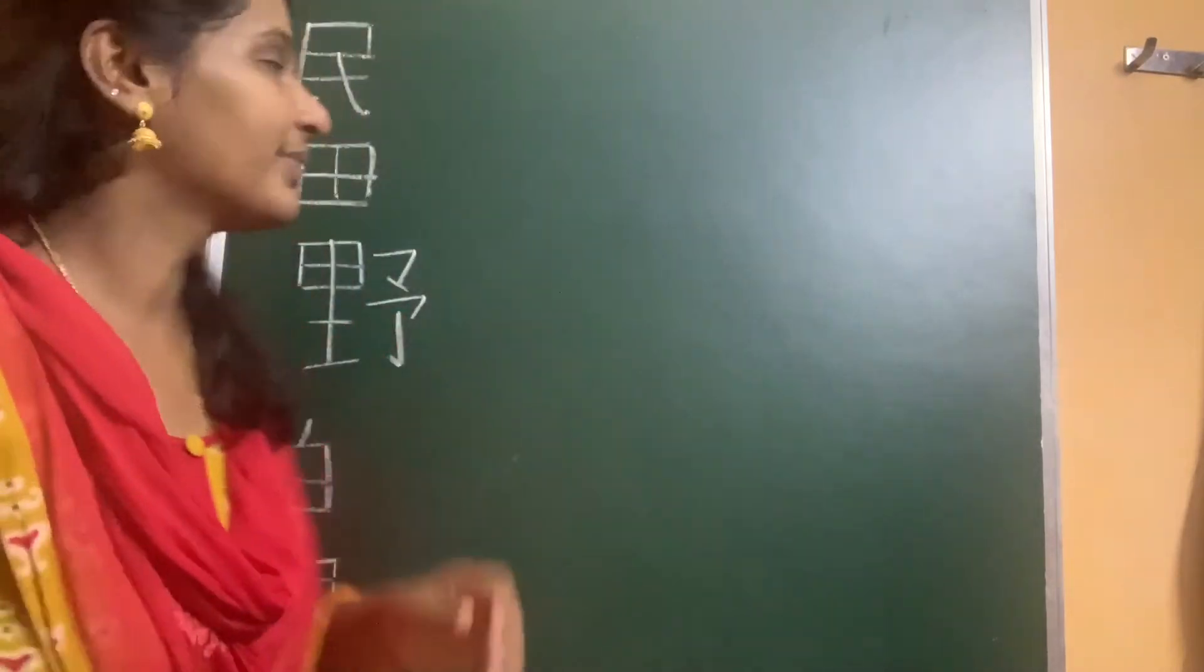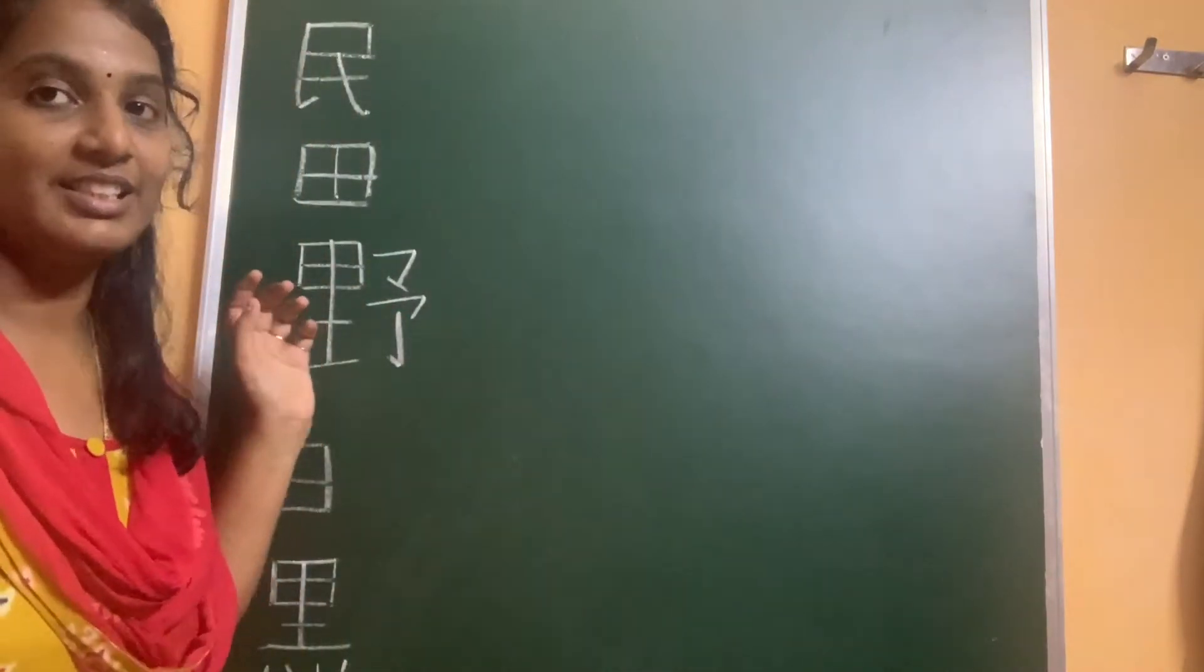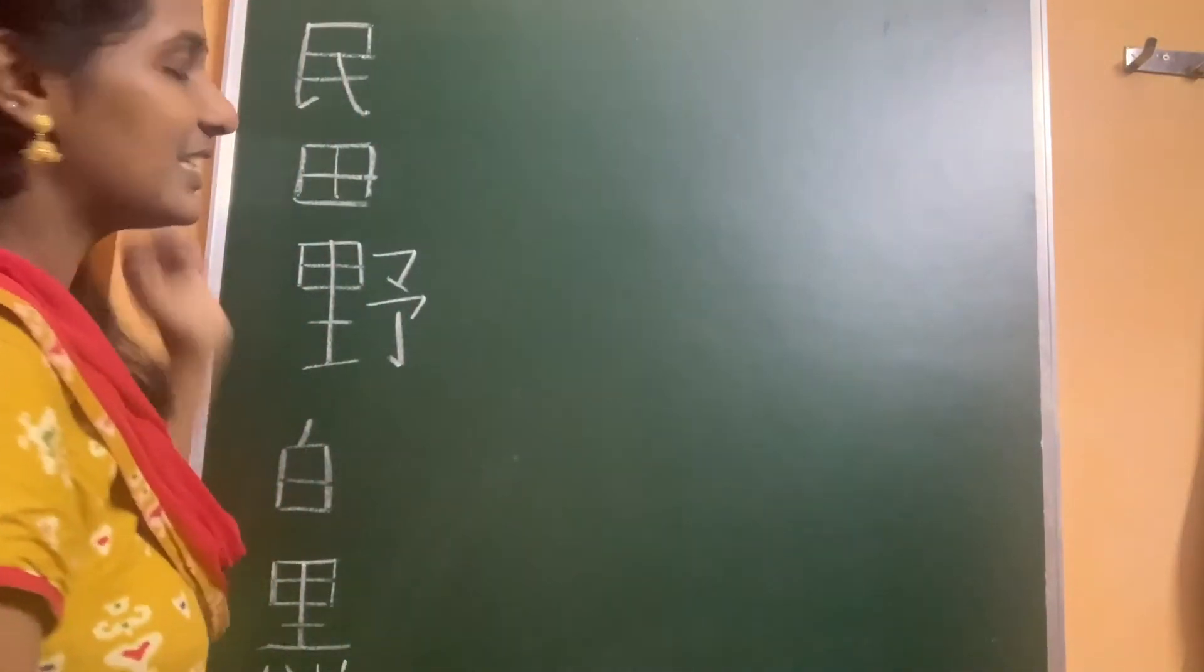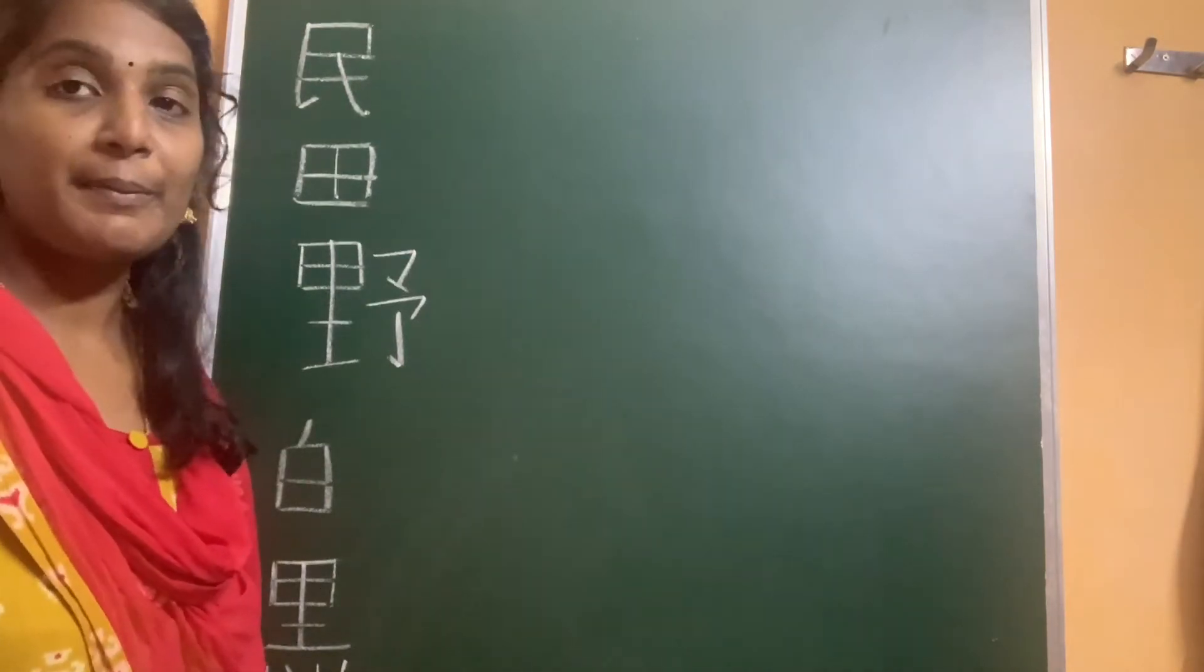Konnichiwa. Today we are going to see the next 5 kanji for JLPT N4 and here are the 5 kanji. This first kanji means nation or people, which is min.